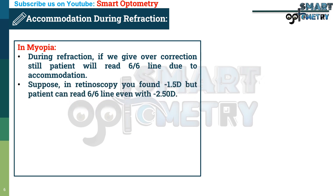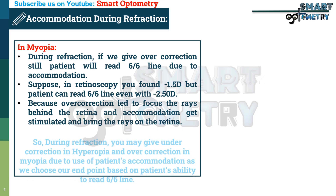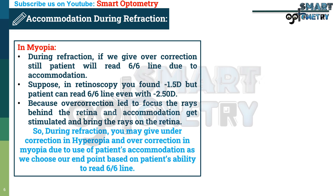Suppose in retinoscopy you found minus 1.5 diopters, but the patient can read the 6/6 line even with minus 2.5 diopters — because overcorrection causes rays to focus behind the retina, accommodation gets stimulated and brings the rays back onto the retina, so the patient can read 6/6. Therefore during refraction, you may give undercorrection in hyperopia and overcorrection in myopia, since we choose our endpoint based on the patient's ability to read the 6/6 line.